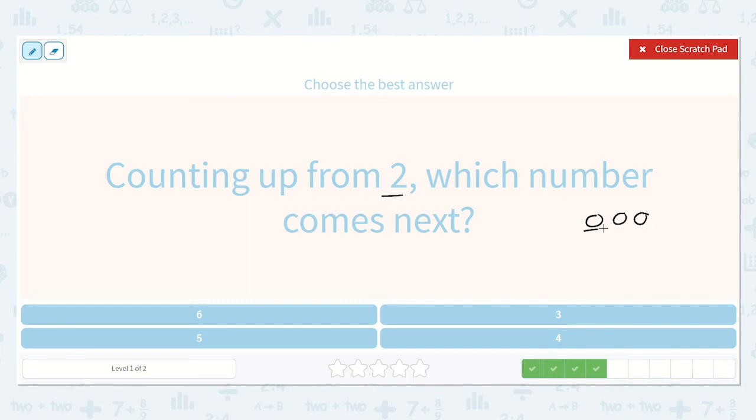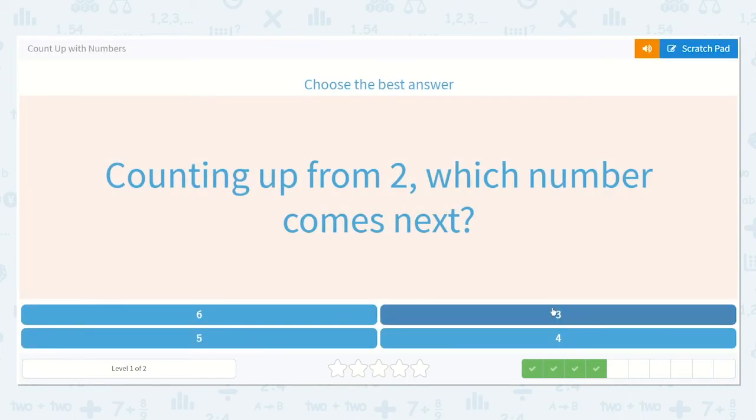So now I have one, two, three. So three comes right after two. So I know that is the correct answer.